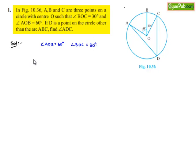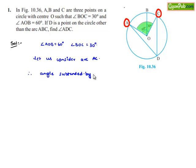Now let us consider arc AC. Therefore here angle subtended by arc at the center is angle AOC which is nothing but angle AOB plus angle BOC, which is equal to 60 degrees plus 30 degrees, that is nothing but 90 degrees.